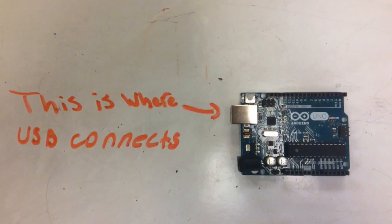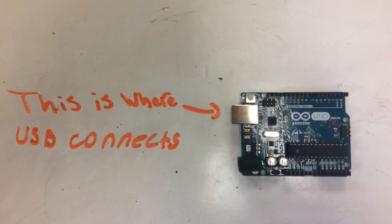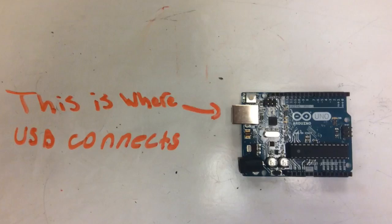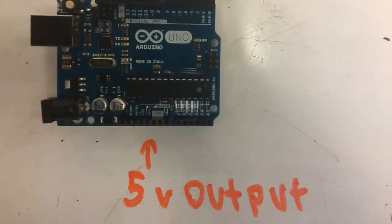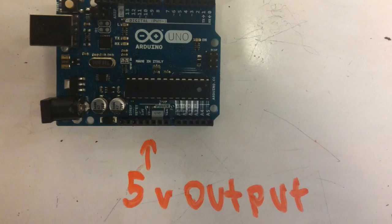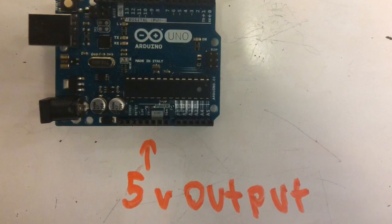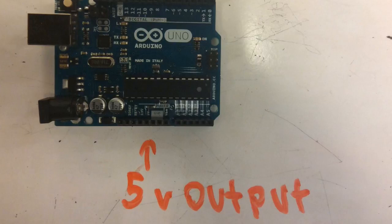The little silver box is where the USB goes in to supply power. The 5-volt pin is a little square — next to it it says 5V — and that constantly outputs 5 volts to the circuit.